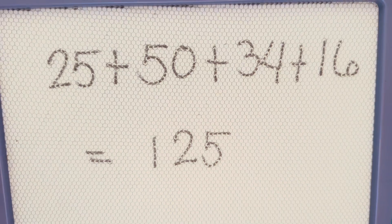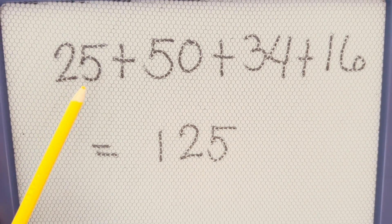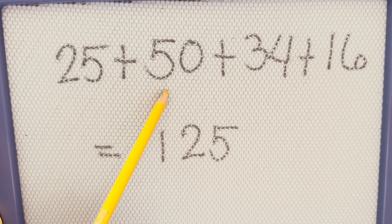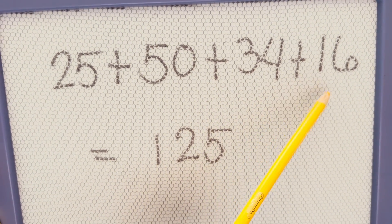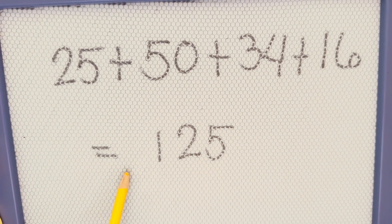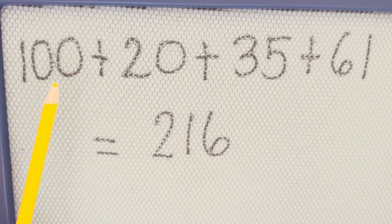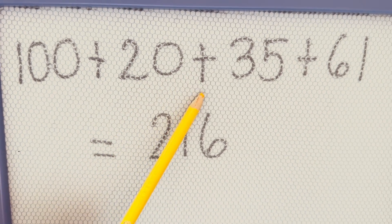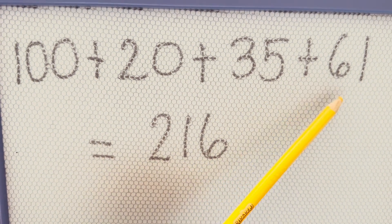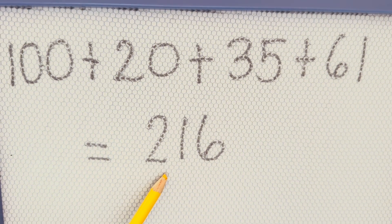Let's summarize! 25 plus 50 plus 34 plus 16 is equals to 125. 100 plus 20 plus 35 plus 61 is equals to 216.